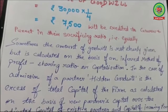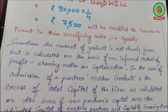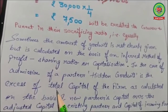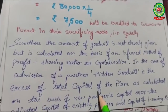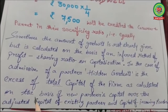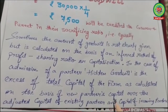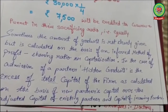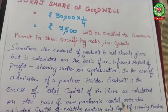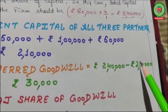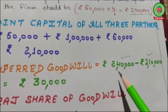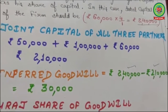Hidden goodwill in the case of admission of a partner is the excess of total capital of the firm as calculated on the basis of the new partner's capital over the adjusted capital of existing partners plus the capital of the incoming partner. The first figure is your total capital including goodwill, and the second is your adjusted capital excluding goodwill.